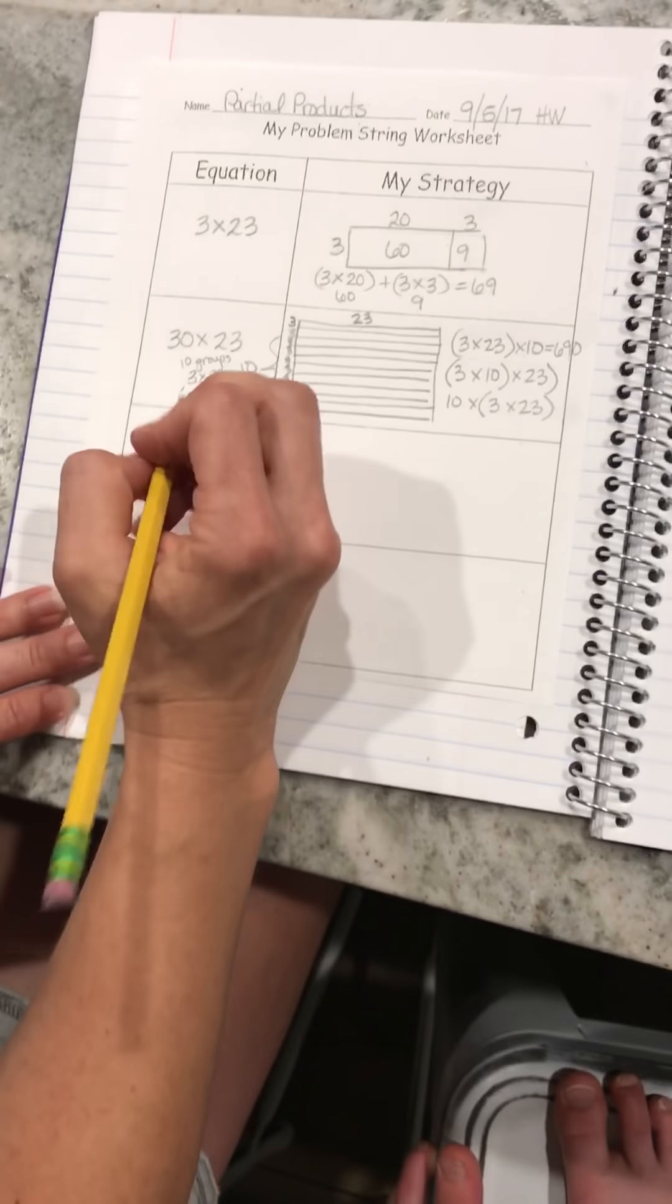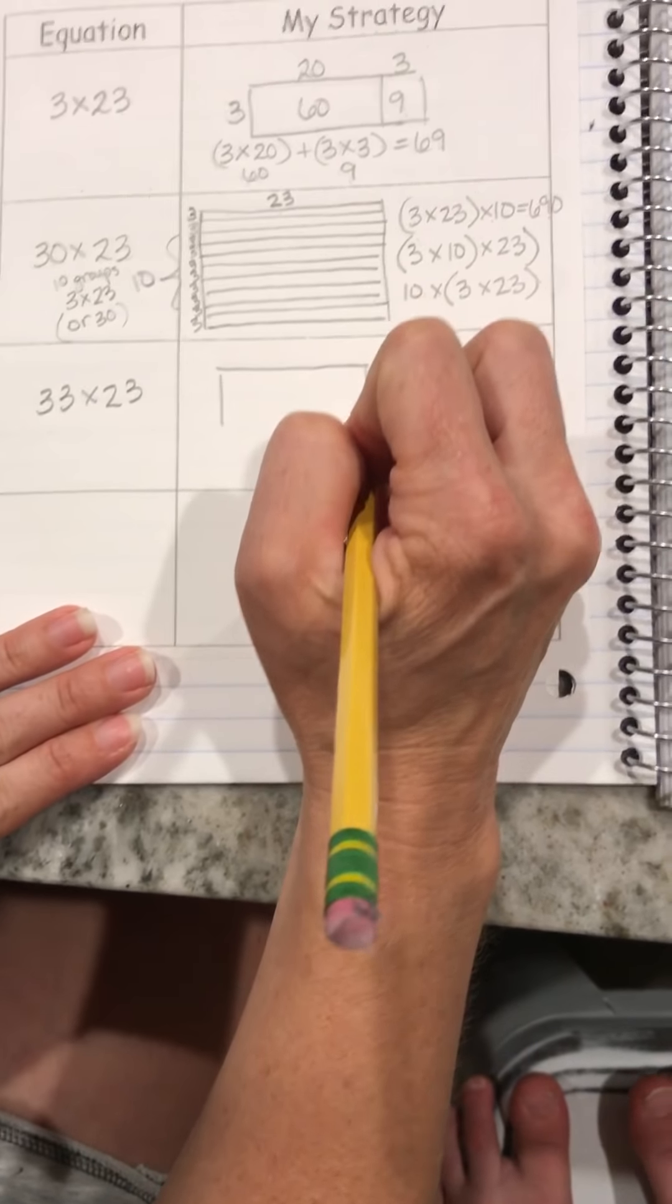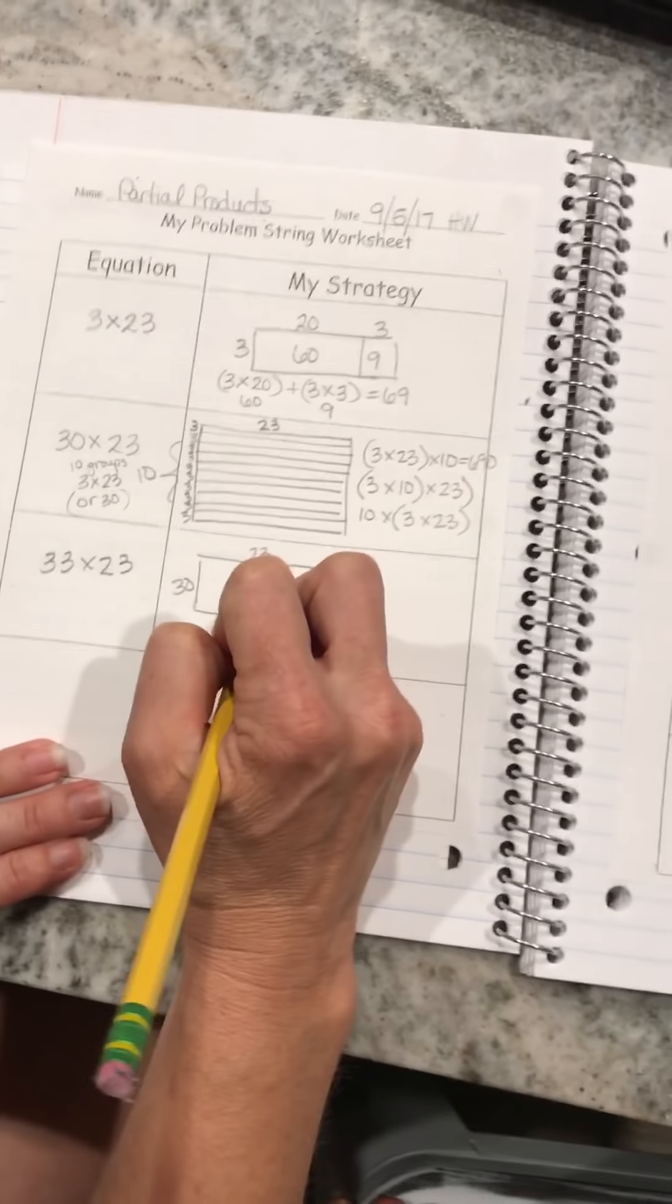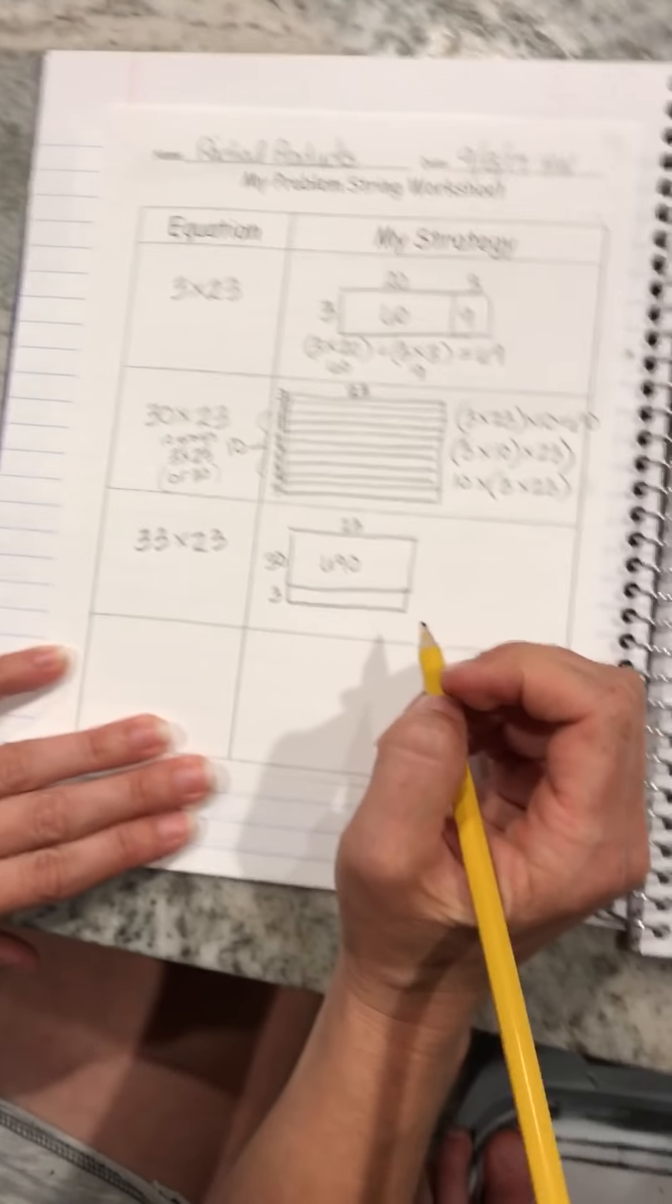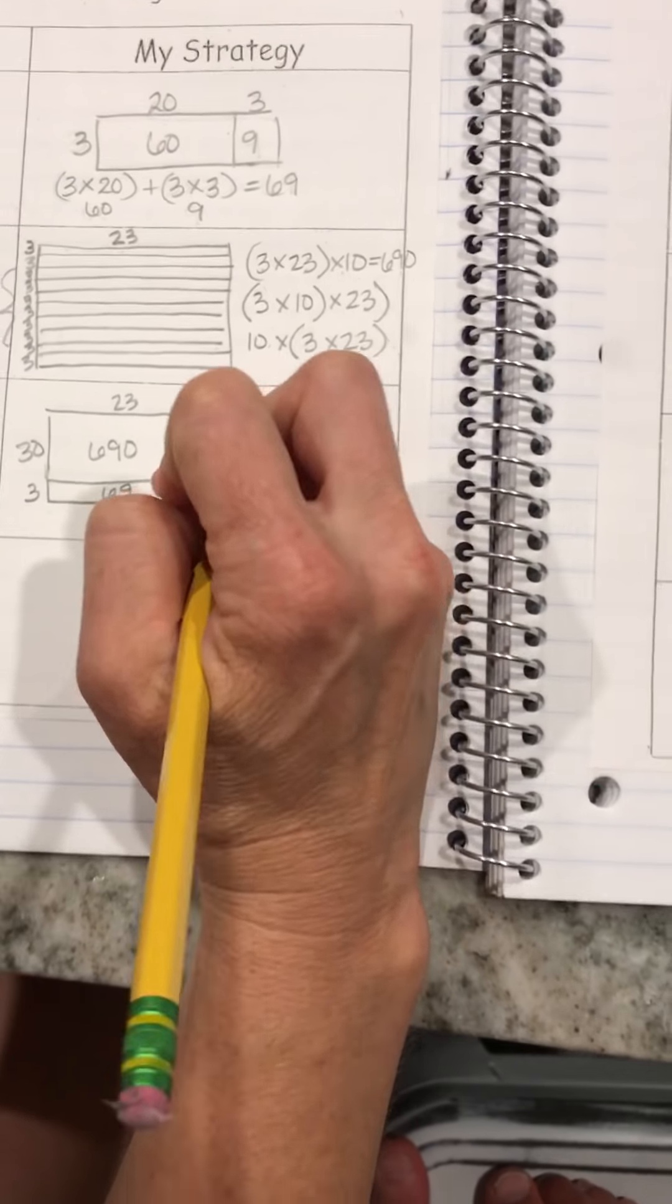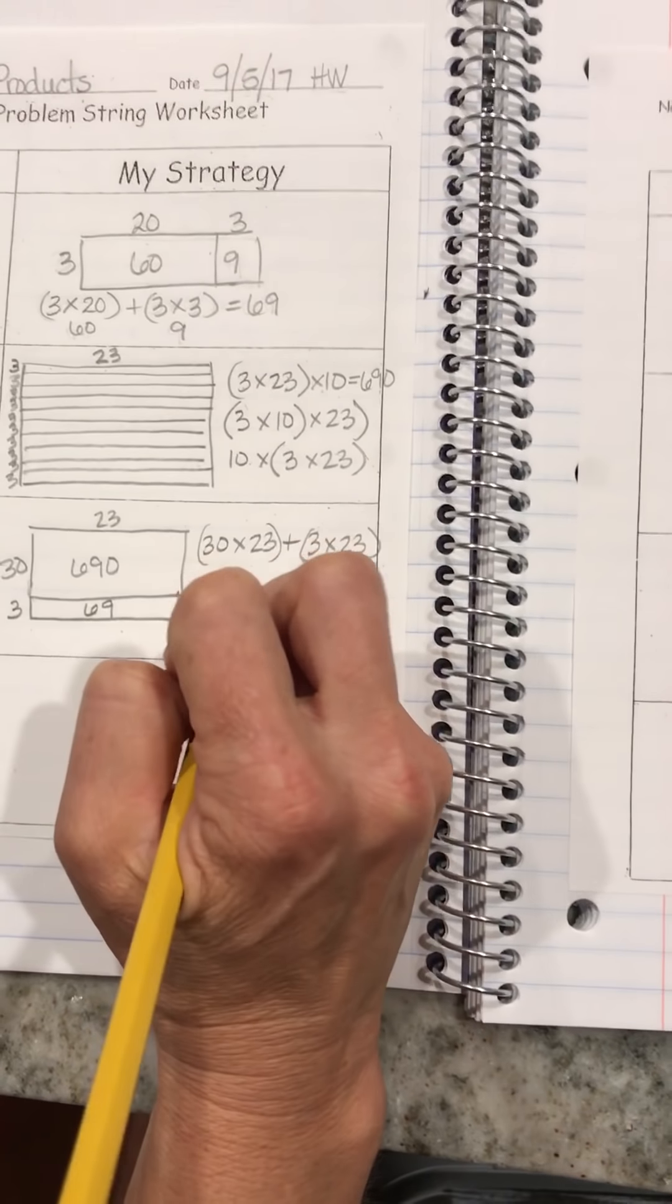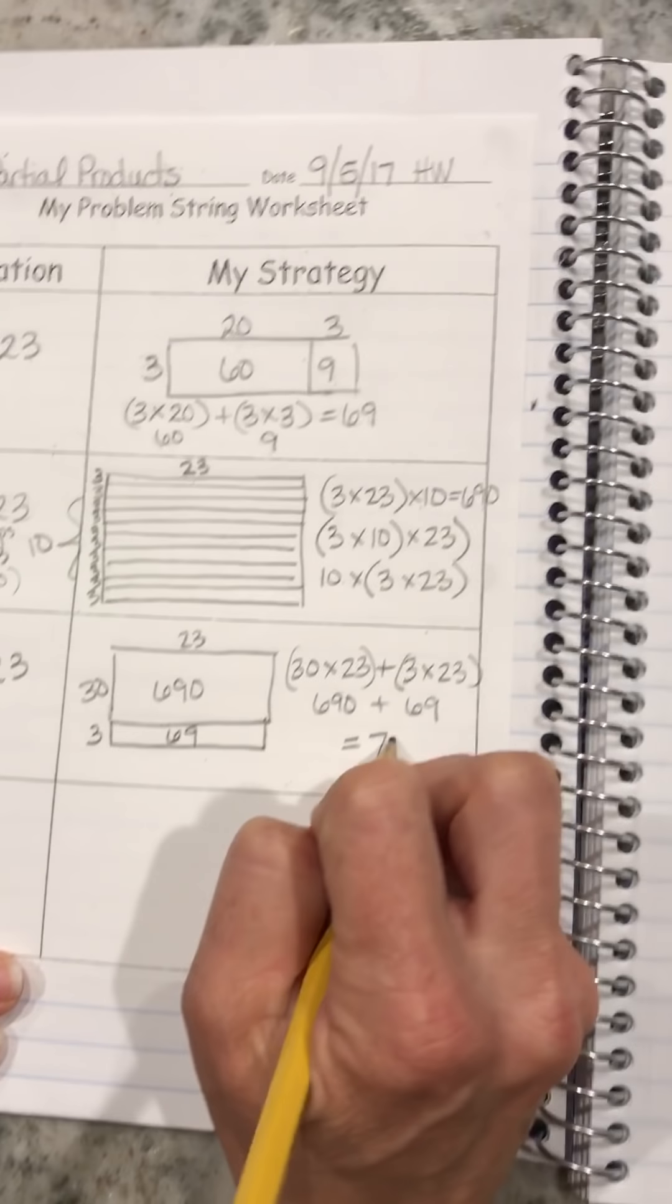My next problem is 33 times 23. With 33 times 23, I already know that 30 times 23 was 690. And now I'm just going to add 3 more. So now I have 3 times 23. So I have 30 times 23 plus 3 times 23, which is 690 plus 69, which gives me a total of 759.